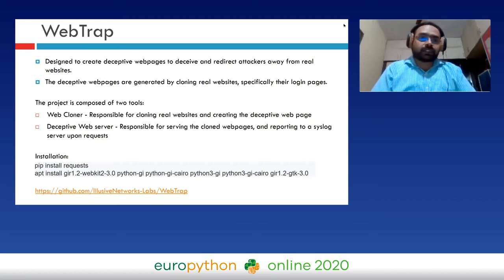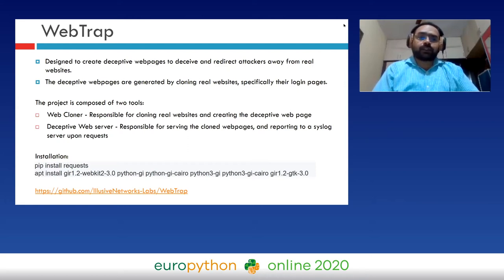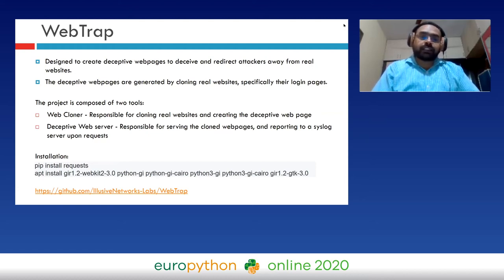The Web Trap deception tool is designed to create deceptive web pages to deceive and redirect attackers away from real websites. Deceptive web pages are generated by cloning real websites — specifically their login pages. This project has two files: a web cloner and a web server. The web cloner clones real websites and creates deceptive web pages. The deceptive web server serves the cloned web pages — not the real ones — and reports to the syslog server upon request. Any access to cloned web pages is logged in the syslog server.